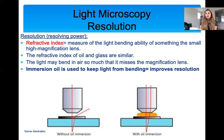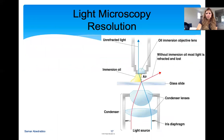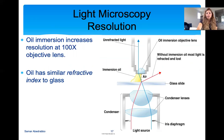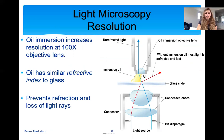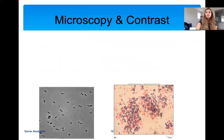We don't use oil with the other objective lenses because there's far enough distance that it doesn't make a difference. But when you get to a very high objective, the lens is almost hitting your slide, so you want to trap that light in. Oil immersion increases resolution at 100x objective lens, meaning you get a much better image, and it prevents the loss of light rays — that's the whole point of why we use oil.